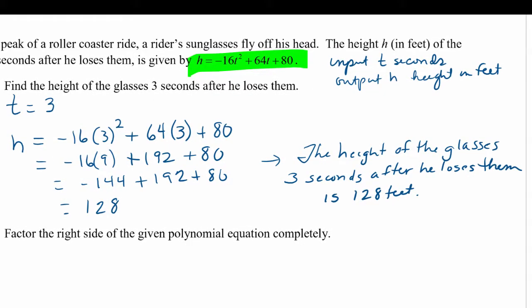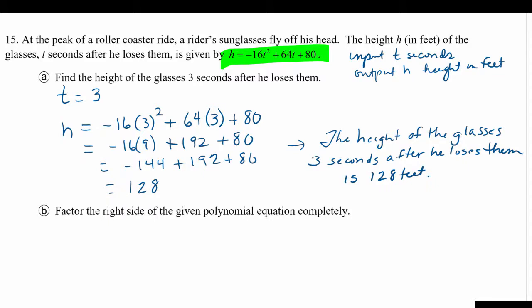So now let's take a look at part b. It says factor the right side of the given polynomial. So again, here's our polynomial. We're going to factor first our GCF. And again, I have that negative t² term. So I'm going to factor out a GCF of -16. And that's going to leave us with t² minus 4t - 5. Again, looking for that GCF sure makes these numbers a lot more friendly, doesn't it?